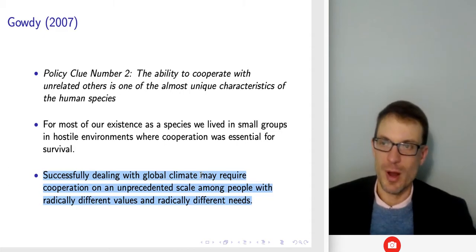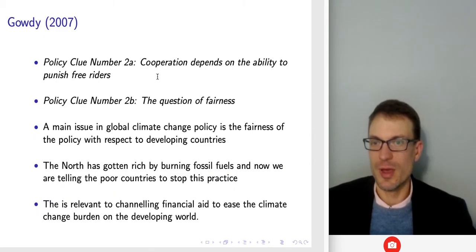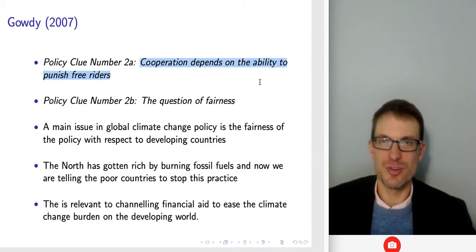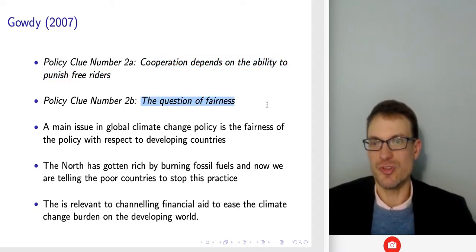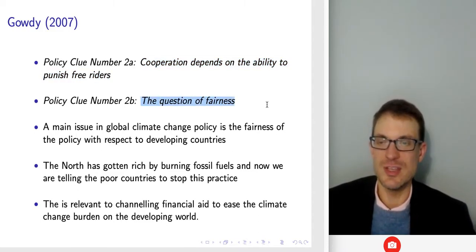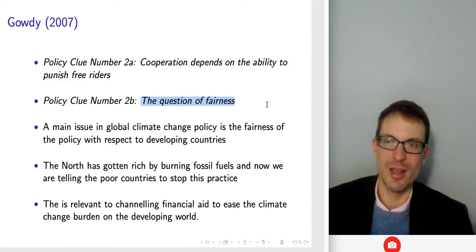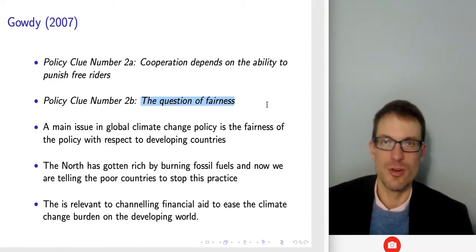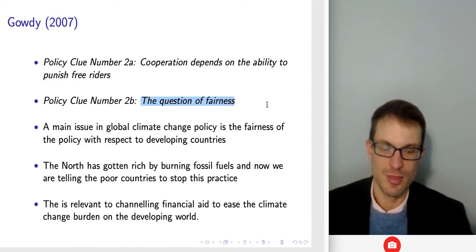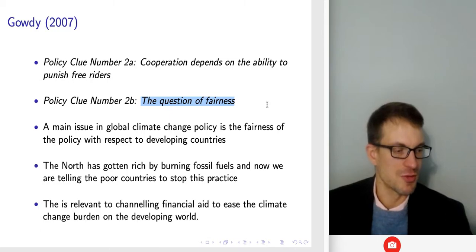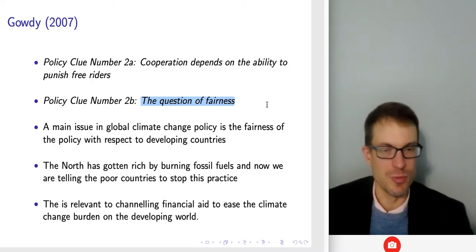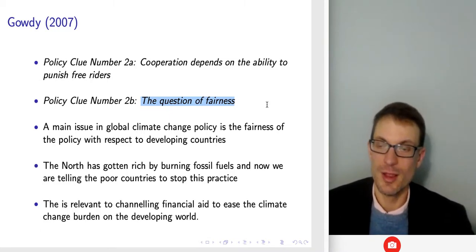The ability to cooperate with unrelated others is one of the almost unique characteristics of the human species. For most of our existence, we lived in small groups and hostile environments where cooperation was essential to survival. Successfully dealing with global climate change may require cooperation on an unprecedented scale, and cooperation depends on the ability to punish free riders and fairness concerns.